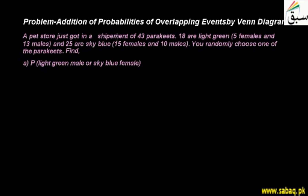The problem is the addition of probabilities of overlapping events. We will solve this through a Venn diagram. A pet store just got in a shipment of 43 parakeets — small-sized parrots. 18 are light green: 5 females and 13 males. 25 are sky blue: 15 females and 10 males. You randomly choose one of the parakeets.